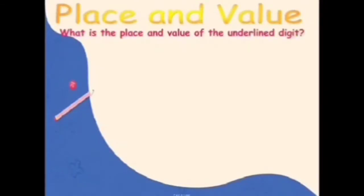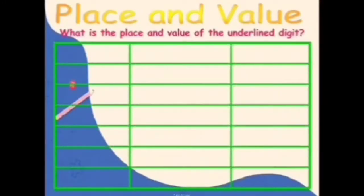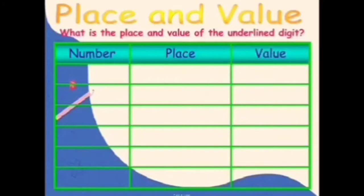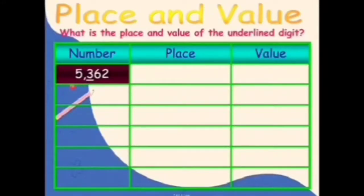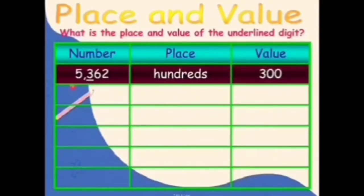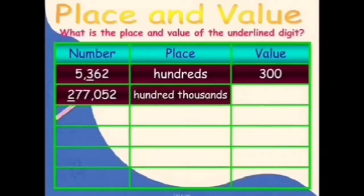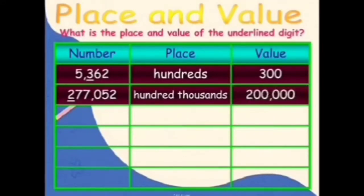Now you know how to identify the place and the value of each digit. Together, let's identify the place and the value of the underlined digit. We have three columns: the number, the place, and the value. The place of three is hundreds, and the value of three is three hundred. The place of two is hundred thousands, and the value of two is two hundred thousand.